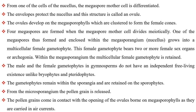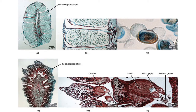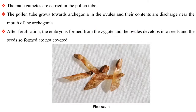From the microsporangium, the pollen grains are released. The pollen grains come in contact with the opening of the ovules borne on megasporophylls as they are carried in air currents. The male gametes are carried in the pollen tube. The pollen tube grows towards the archegonia in the ovules and their contents are discharged near the mouth of the archegonia. After fertilization, the embryo is formed from the zygote and the ovules develop into seeds, and the seeds so formed are not covered.